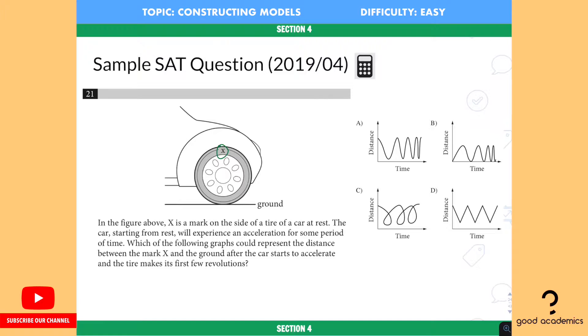It's at the top of the tire at the moment. The car, starting from rest, will experience acceleration for some period of time. So the tire is going to move faster and faster. So imagine that in your head. Which of the following graphs could represent the distance between the mark X and the ground after the car starts to accelerate and the tire makes its first few revolutions.